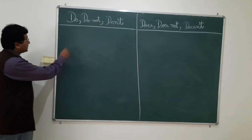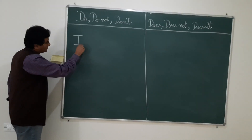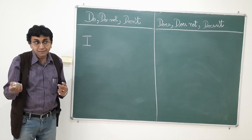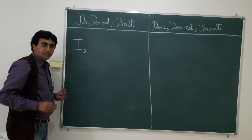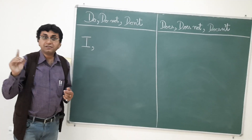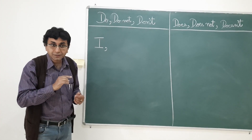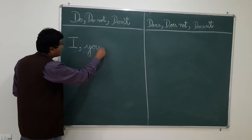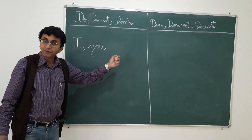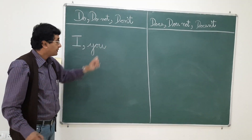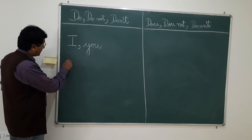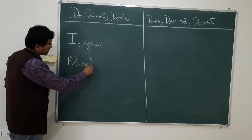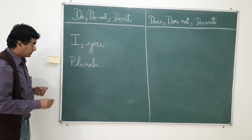Now, here let me say I. I do not like rings. So I. You, my dear friend, you do not go there. So you — and you in the plural form also — all of you will take a do or a do not. Similarly, all the plurals take a do or a do not. For example,